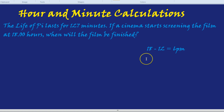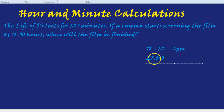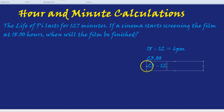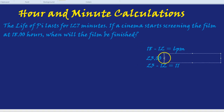What about 2300 hours? 23 take away 12 is 11, so 2300 hours is 11pm. You can always use that rule of thumb of taking away 12.